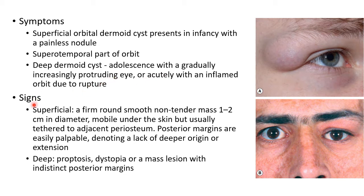Now let us discuss about the signs of dermoid cyst. In case of superficial dermoid cyst, there will be a firm, round, smooth, non-tender mass which is usually 1 to 2 centimeters in diameter. It will be mobile under the skin but usually tethered to the adjacent periosteum. Its posterior margins are easily palpable, denoting a lack of deeper origin or extension.